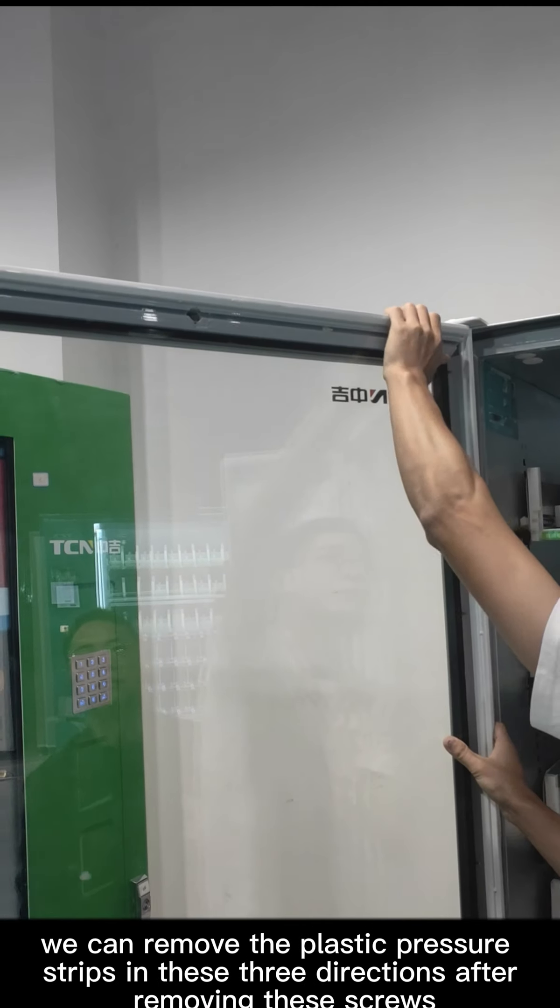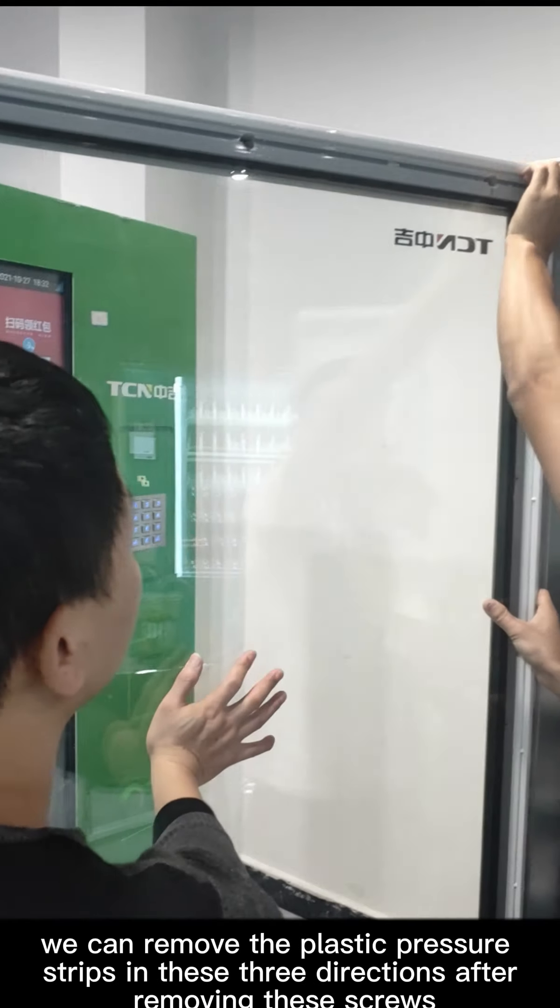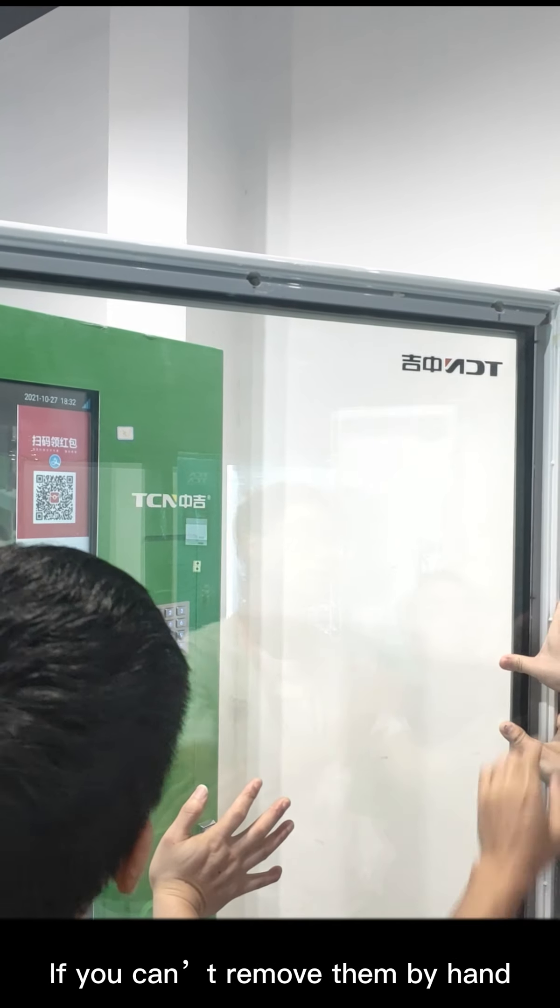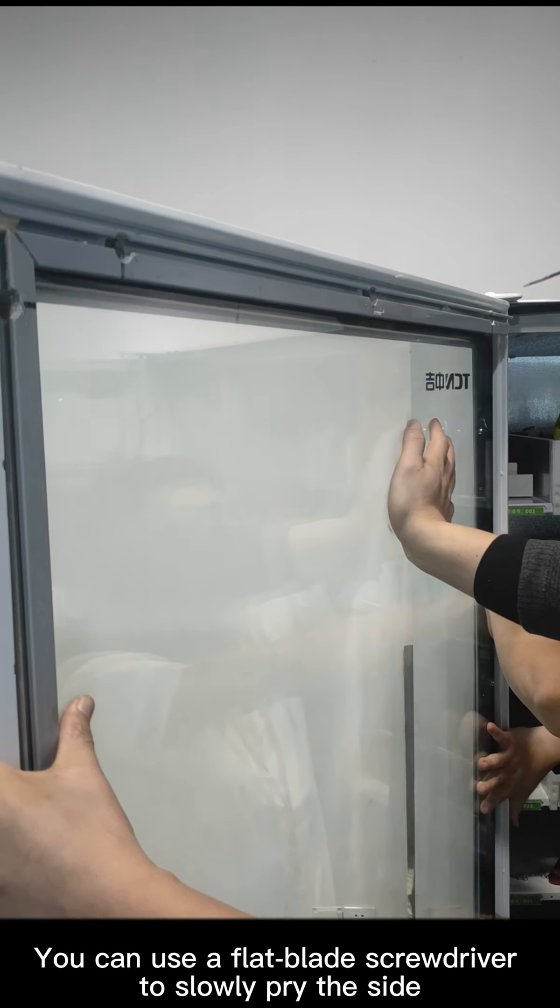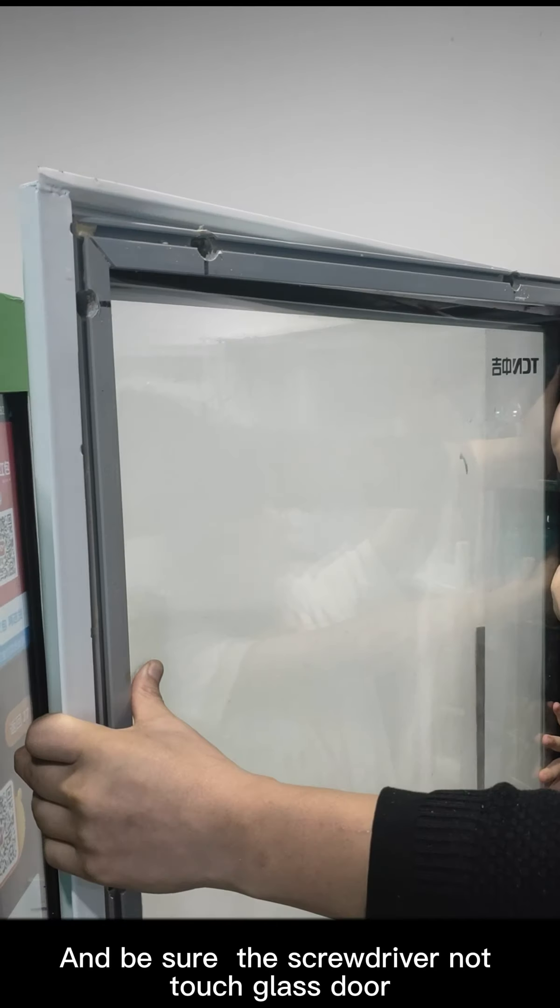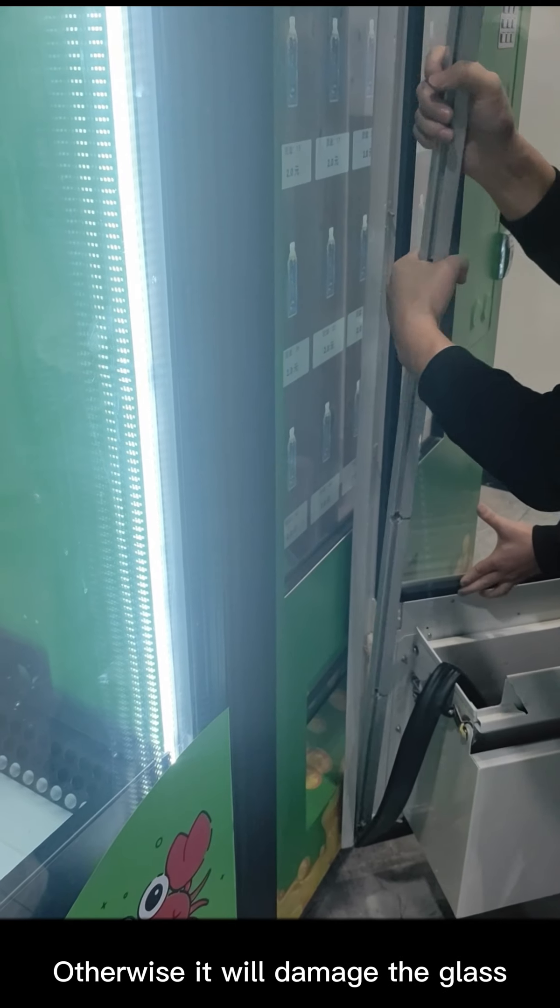We can remove the plastic pressure strips in these three directions after removing these screws. If you can't remove them by hand, you can use a flat blade screwdriver to slowly pry the side, and be sure the screwdriver does not touch the glass door, otherwise it will damage the glass.